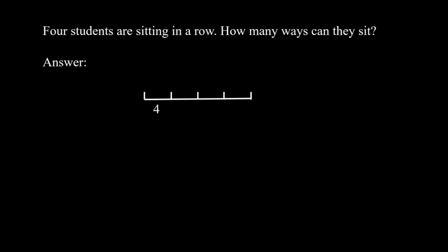For the first chair, any of the 4 students can sit there: 4 possibilities. For the second chair, the student on chair 1 cannot sit there, so 3 possibilities. For the third chair, 2 possibilities. For the last chair, only 1 possibility remains. Multiplying gives 4 times 3 times 2 times 1, which is 4 factorial, or P(4,4), equal to 24.